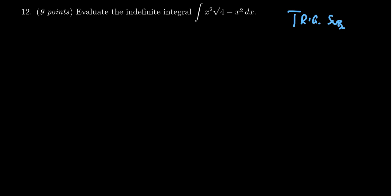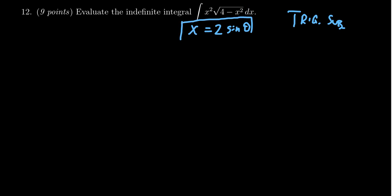Notice that we have a difference of squares — a constant minus a variable — so therefore we're going to do a sine substitution. We want x equals 2 sine theta. Taking the square root of the constant we get a 2, so that's the coefficient of sine. Taking the square root of x squared we get x. This is the basis for the rest of the substitution.